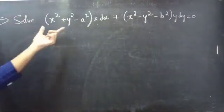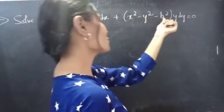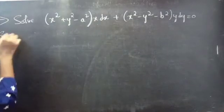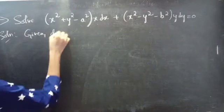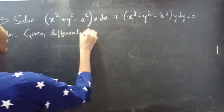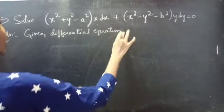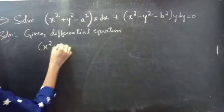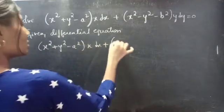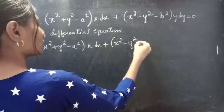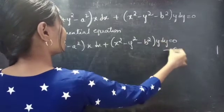Problem: Solve (x² + y² - a²)x dx + (x² - y² - b²)y dy = 0. Consider the given equation as equation number 1.